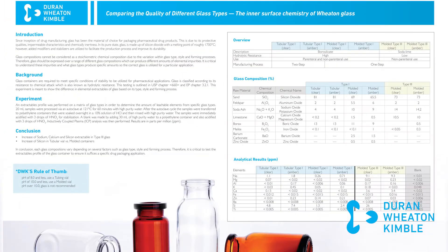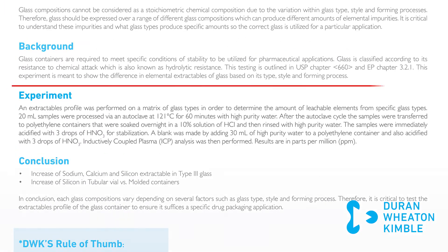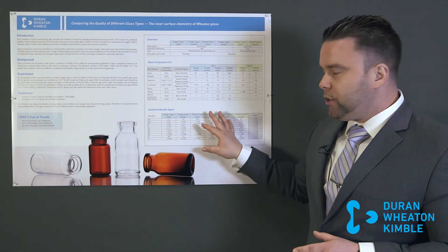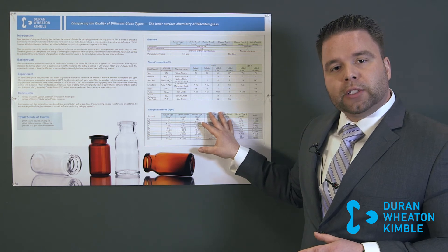What we did with this experiment is we took glass vials and containers, specifically 30 milliliter tubular and molded containers, and we put 20 milliliters of ultra-purified water with a pH of 8 in each one. We autoclaved it at 121 degrees Celsius for 60 minutes. Then we took an aliquot of each one and put it through the ICP-OES testing. I have the results shown here, and this is in parts per million.